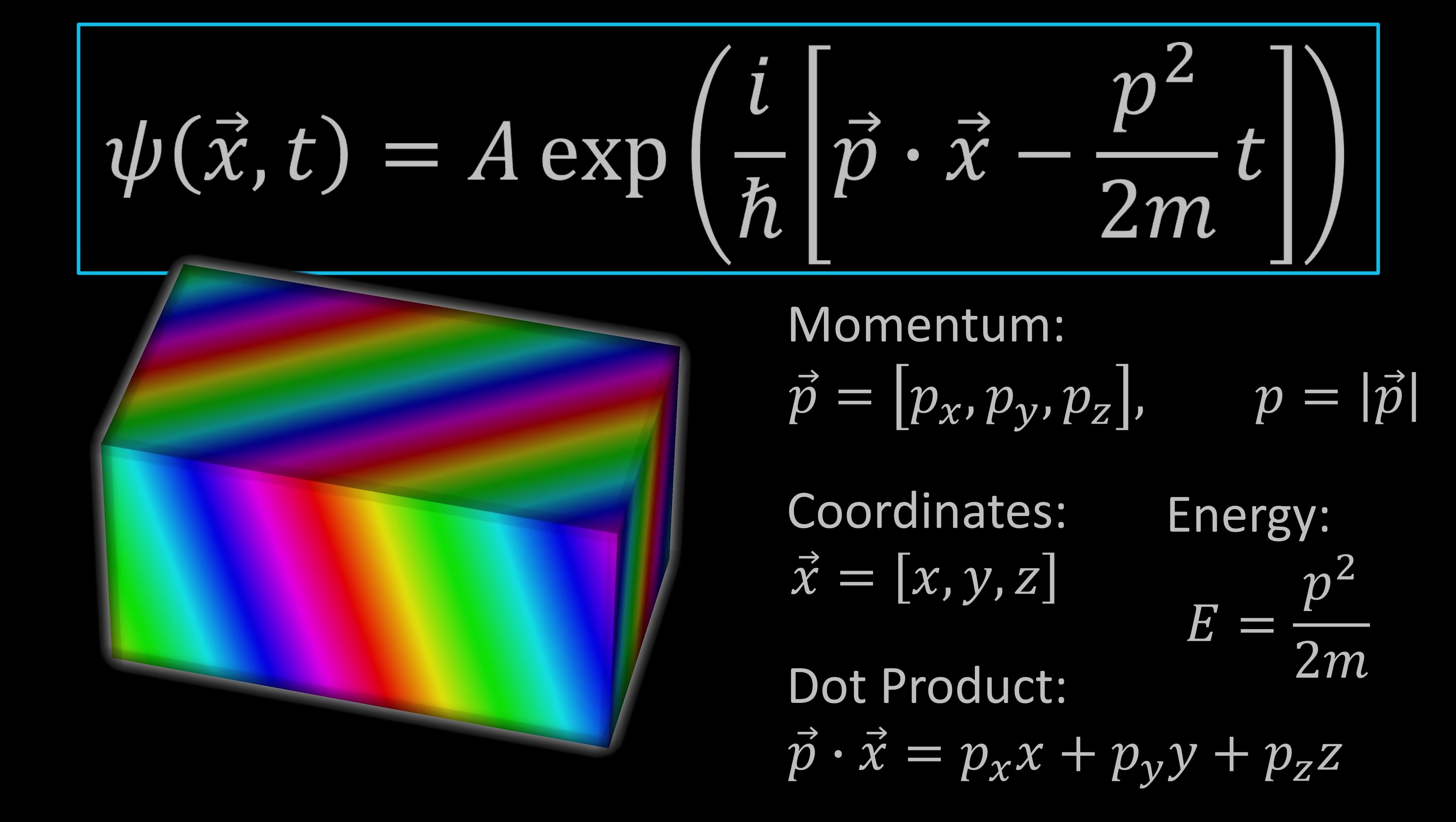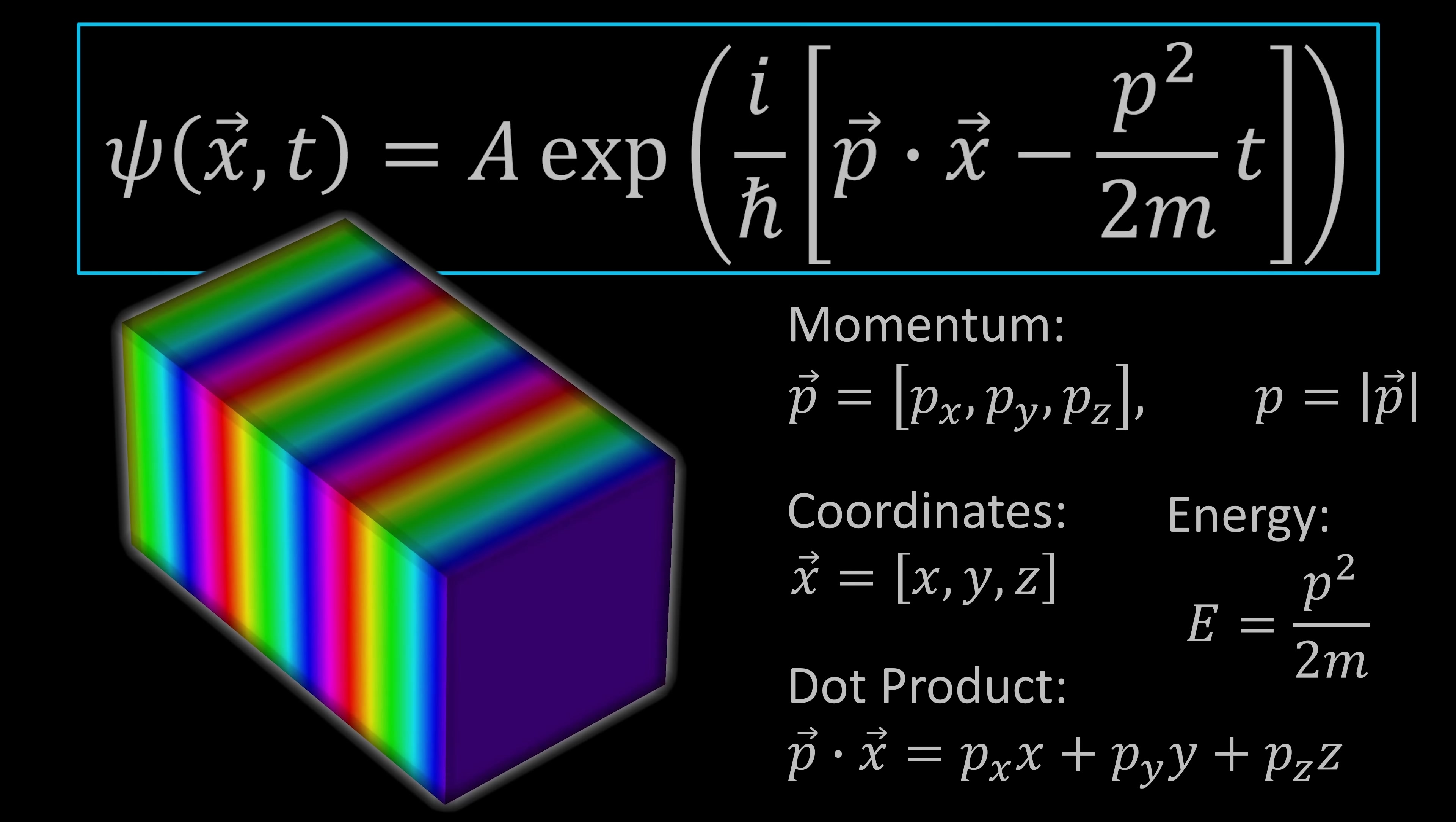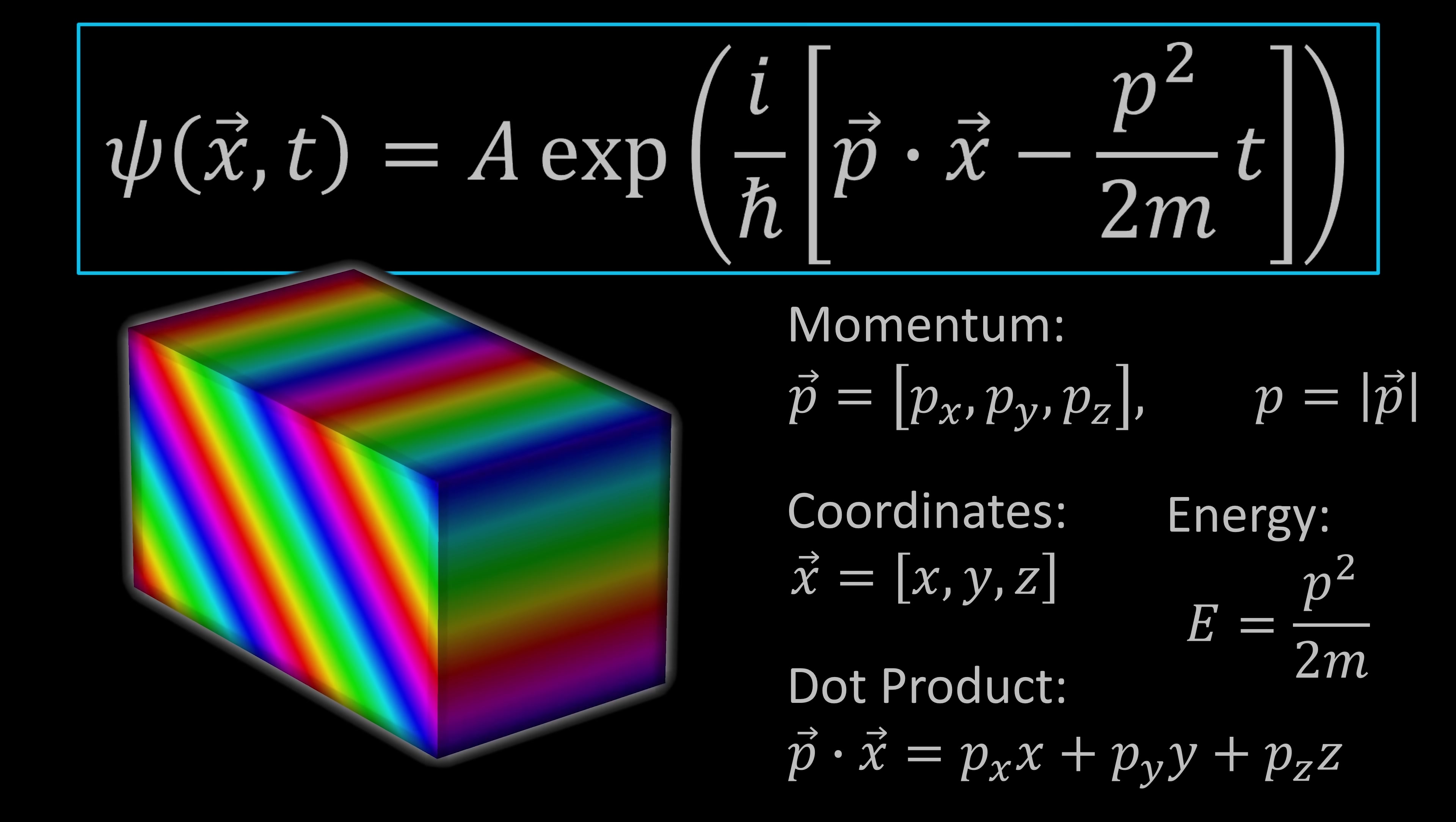One thing I should say about these plane waves is that these are momentum and energy eigenstates. These correspond to particles whose momentum is precisely known, but as a result, in quantum mechanics, you know the momentum, you don't know the position. So as a result, these plane waves go across all of space.